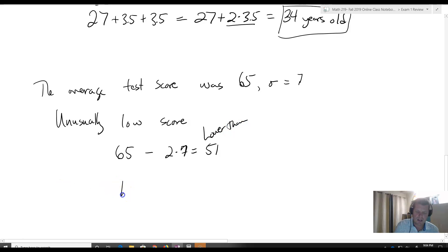An unusually high score would then be 65 plus two times seven, which equals 79. So higher than a 79 would be an unusually high score.